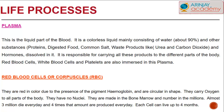The plasma is the liquid part of the blood. It is colorless mainly because it consists of water — around 90 percent — and other substances such as digested food, common salt, proteins, and waste products like carbon dioxide and urea, along with hormones that are dissolved in it. It is responsible for carrying all these products to the different parts of the body.